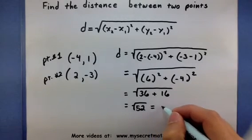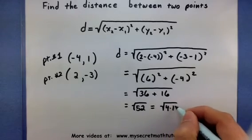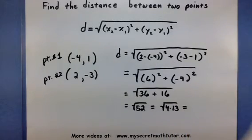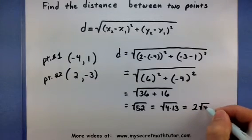In fact, 52, if we look at it and start to break it down, it's actually equal to 4 times 13. This means we can simplify this root into 2 times the square root of 13.